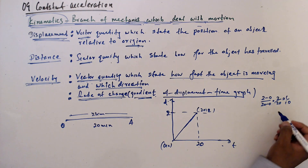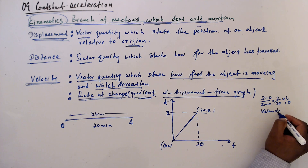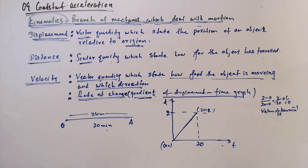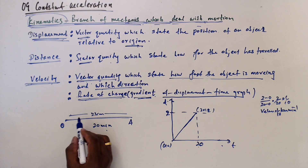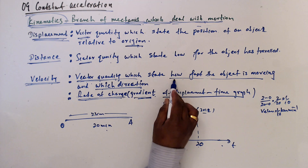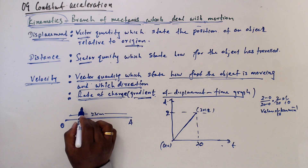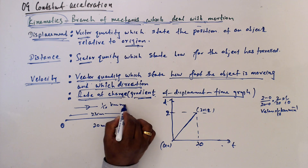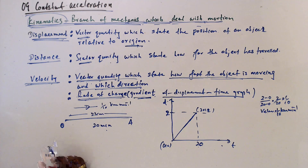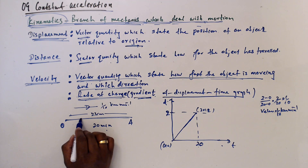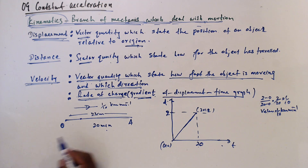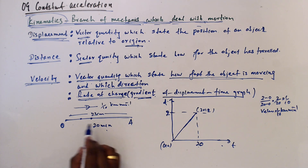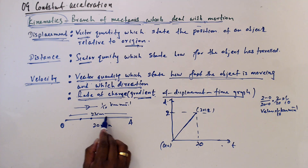So the velocity is 1 over 10 kilometers per minute, meaning the object is moving at that speed in this direction. Now, what is the velocity of any other point on this straight line? Still 1 over 10 — any point on the line gives the same gradient, 1 over 10 in this direction.